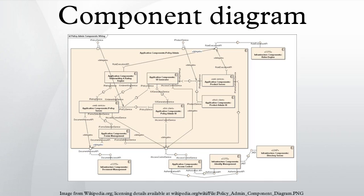Components are wired together by using an assembly connector to connect the required interface of one component with the provided interface of another component. This illustrates the service-consumer, service-provider relationship between the two components. An assembly connector is a connector between two components that defines that one component provides the services that another component requires. It is defined from a required interface or port to a provided interface or port.